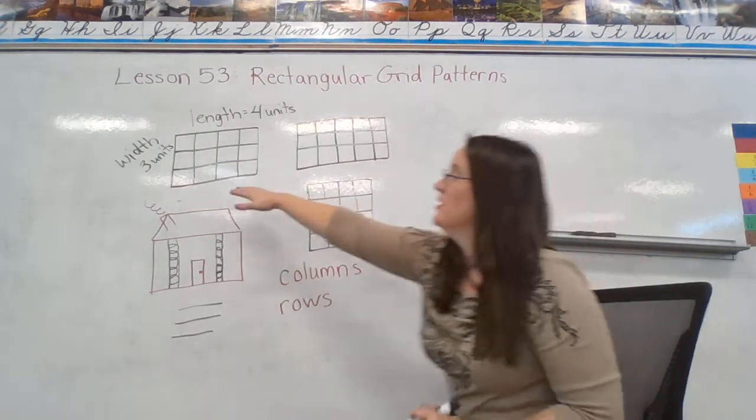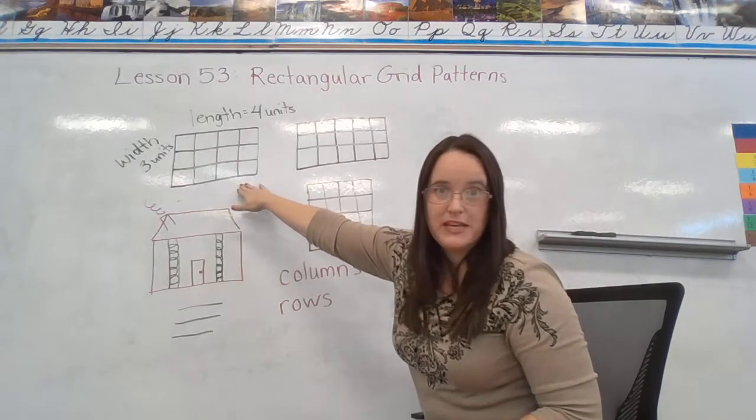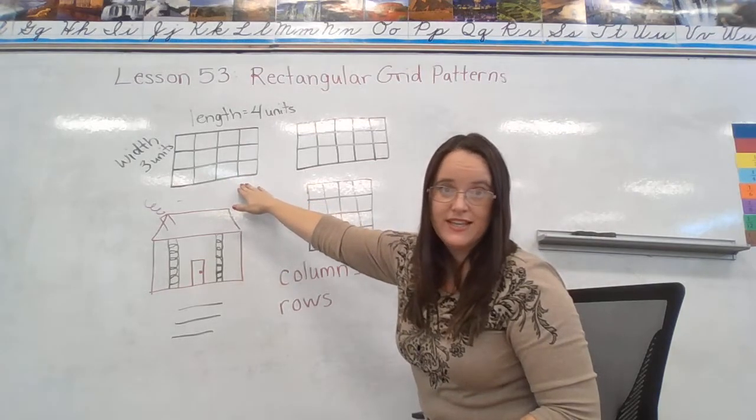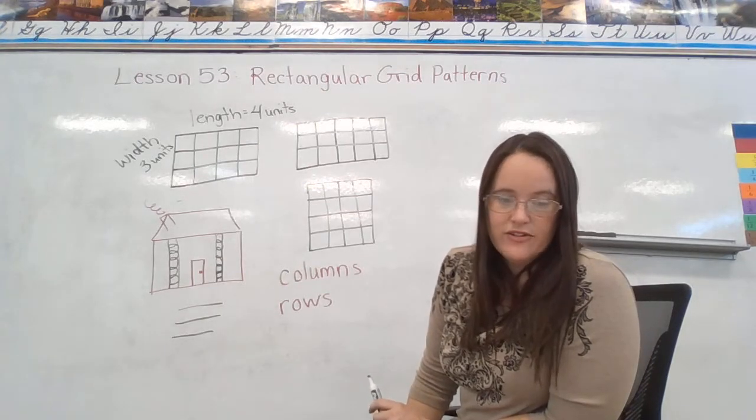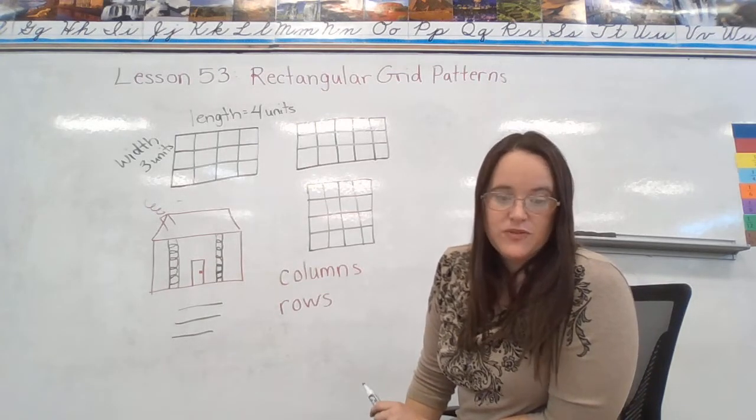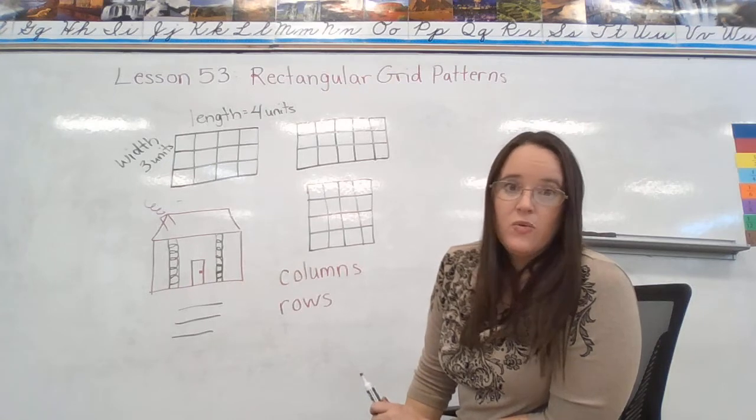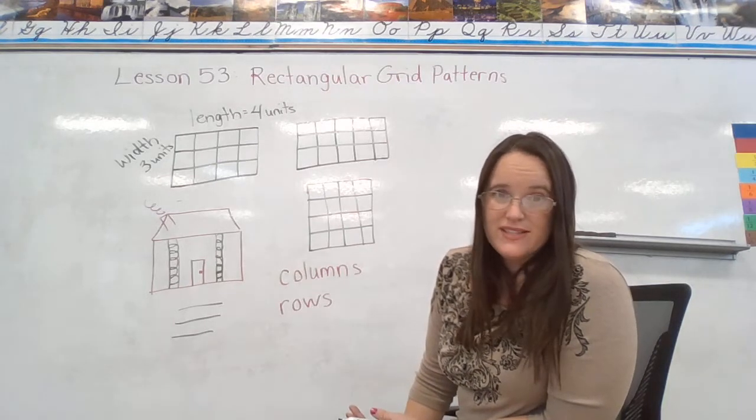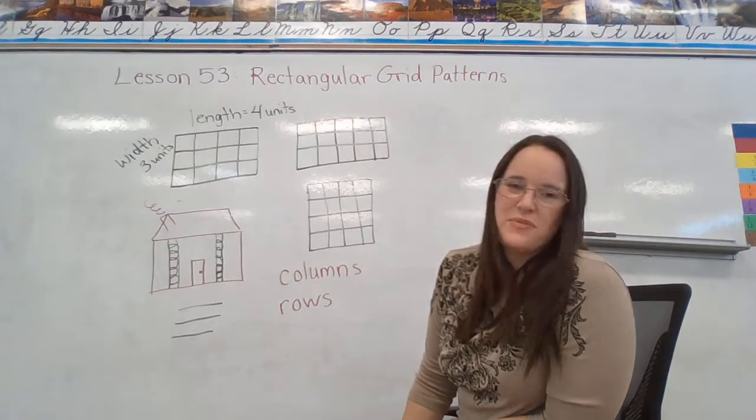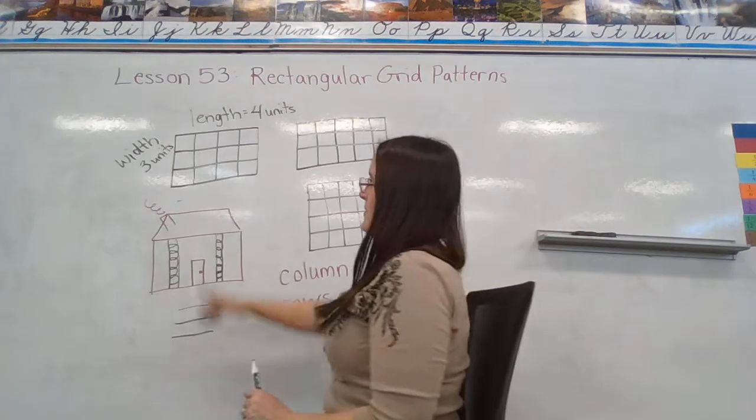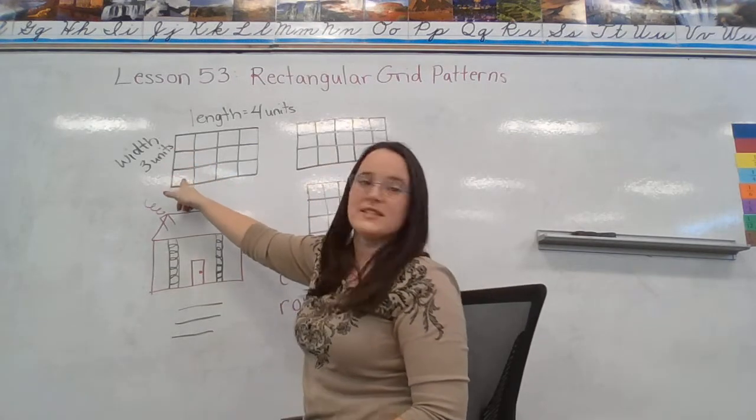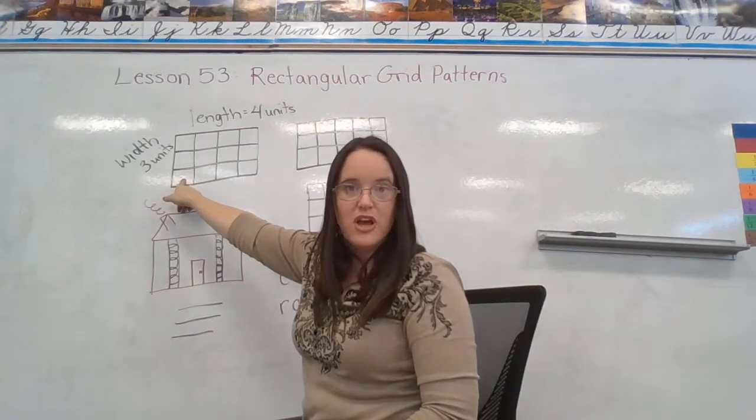Our next example, we're looking at the same picture that we just counted. And now the question says, how many small squares are inside this rectangle? Well, I could count them by ones, but I don't really want to do that. Because I know an easier way, a quicker way. I know that there are three squares in each column.